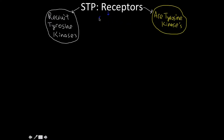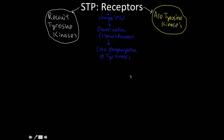Unlike with the 7-transmembrane alpha helix receptors, these are about changes in quaternary level protein structure. Both types are involved in dimerization upon ligand binding, and this dimerization results in cross-phosphorylation of tyrosine kinases — which are kinase enzymes that phosphorylate at the tyrosine residues, playing a role in cell division, cell proliferation, and cell maturation.